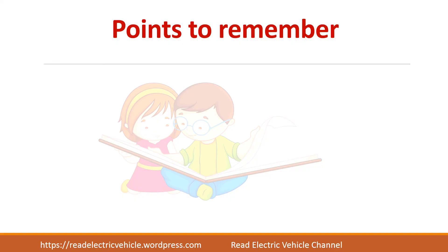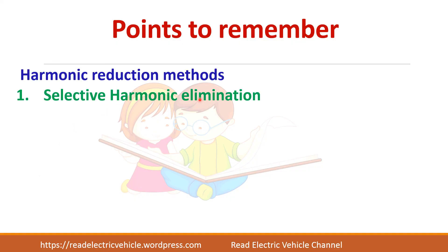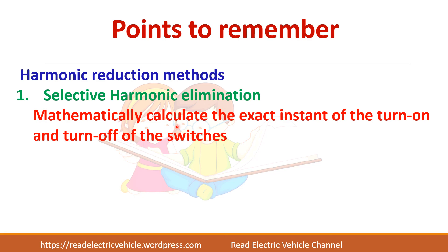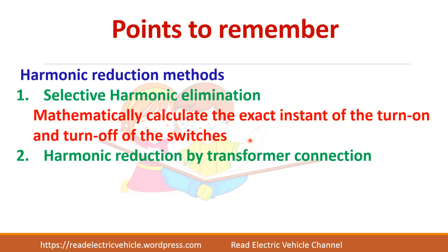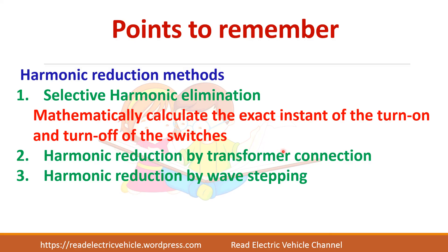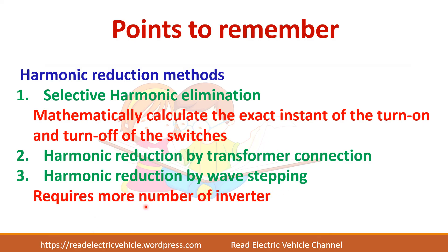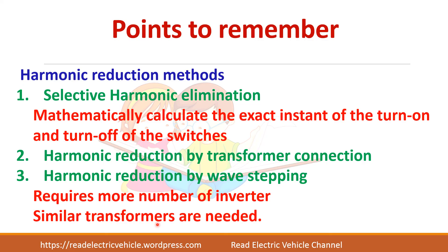In summary, there are different harmonic reduction methods. The first is selective harmonic elimination, where you mathematically calculate the exact instant of turn-on and turn-off of switches to eliminate particular harmonics. You can also reduce harmonics by using transformers with phase-shifted inverters. In both the transformer and stepped wave methods, more inverters and transformers are required. There are also other harmonic reduction methods not covered in this video.